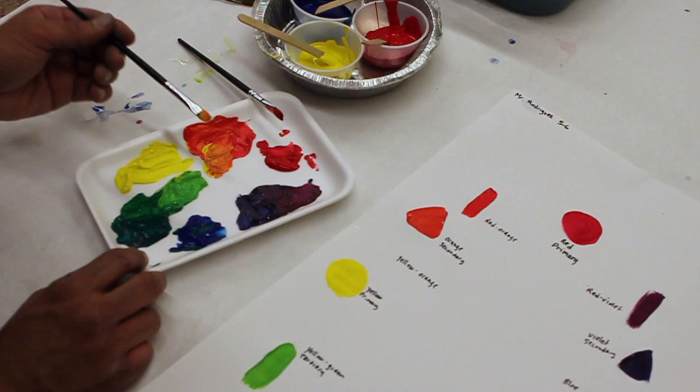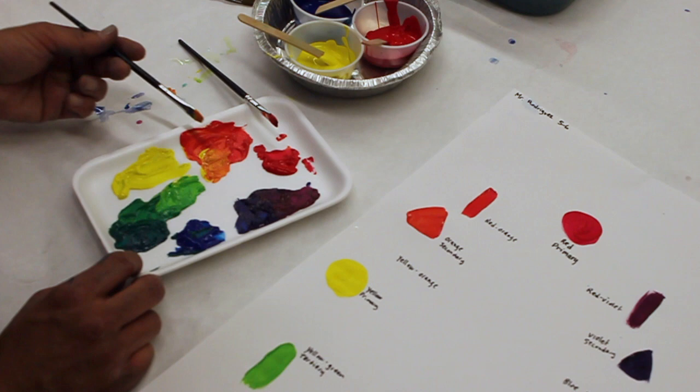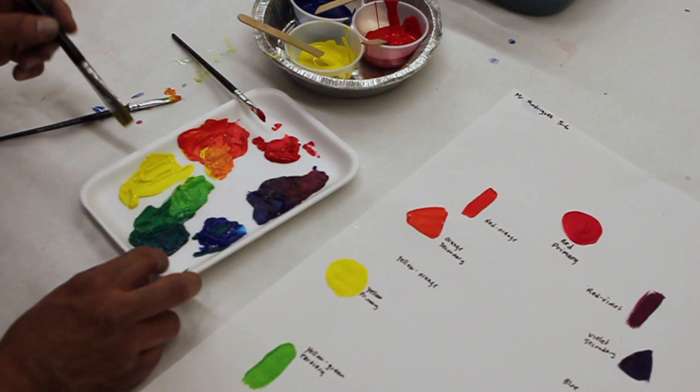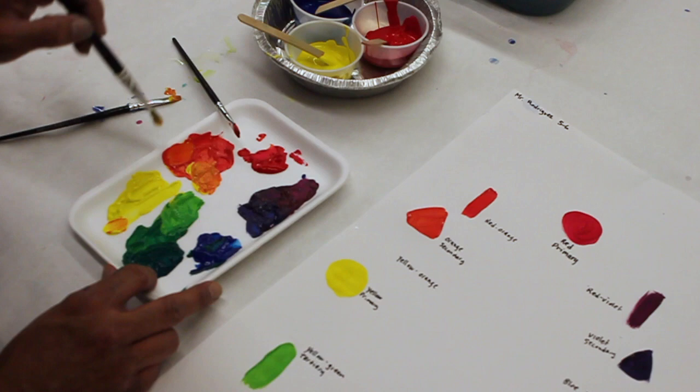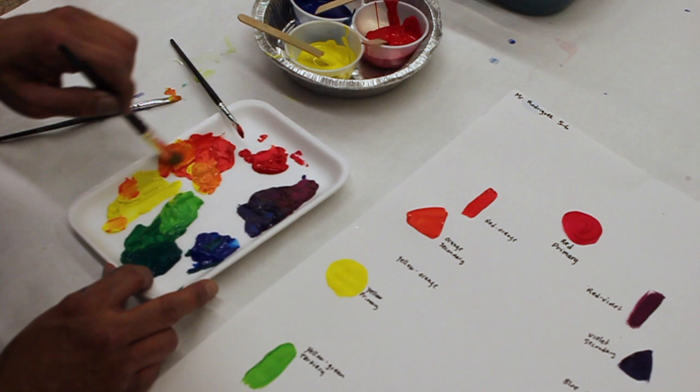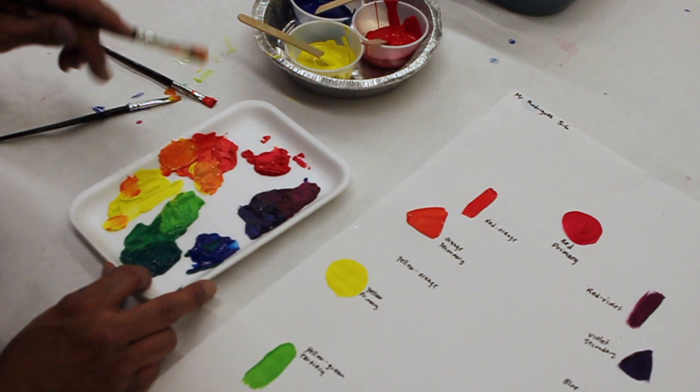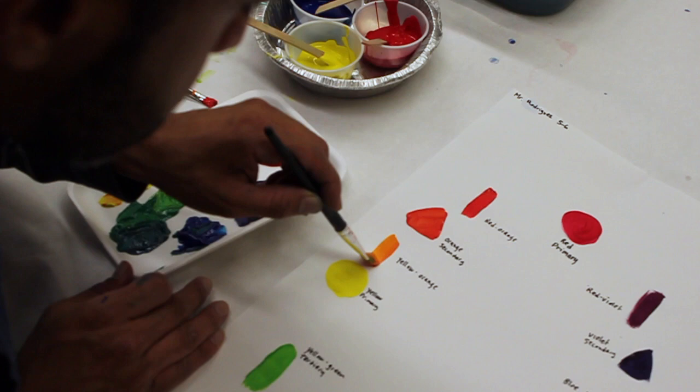I think somehow I got some green in there. This brush is dirty maybe. I don't know. What I'm going to do is I'm going to start over. I'm going to take some yellow here and add it over here. There we go. It's a nice bright orange. It's going to be yellow-orange.